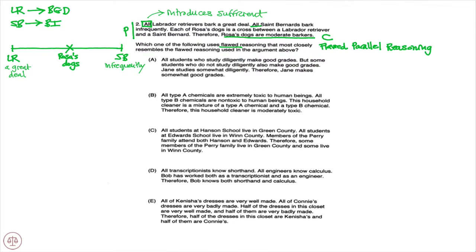Answer A: All students who study diligently make good grades, but some students who do not study diligently also make good grades. Jane studies somewhat diligently, therefore Jane makes somewhat good grades. While A is flawed, it is not the same flaw we saw in the passage. 'All' introduces sufficient, so studying diligently is sufficient for making good grades. It then says Jane studies somewhat diligently, therefore she makes somewhat good grades — that's a different flaw, so A is eliminated.